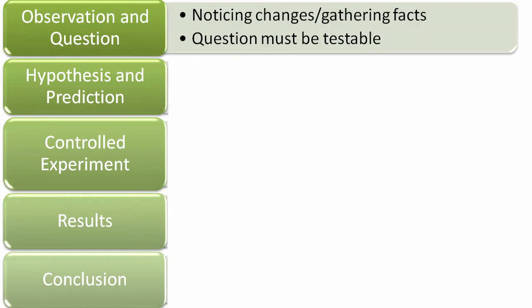We're going to begin first with observation and question. What we're thinking of is that people simply observe things — you notice things, things are changing, you're gathering facts, and in most people it should elicit questions like, why does this happen? It's important to recognize that the questions here must be testable. If a question is not testable, it's out of the realm of science, and many questions are off-limits in science for that very reason.